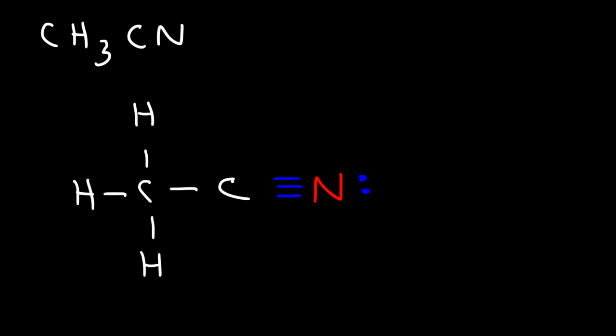So what is the bond angle around this carbon atom? So what is the H-C-H bond angle? What would you say it is? Whenever you see carbon attached to four things, it has a tetrahedral molecular geometry. And as a result, it's going to have a bond angle of 109.5. So that is the answer for the first carbon atom.